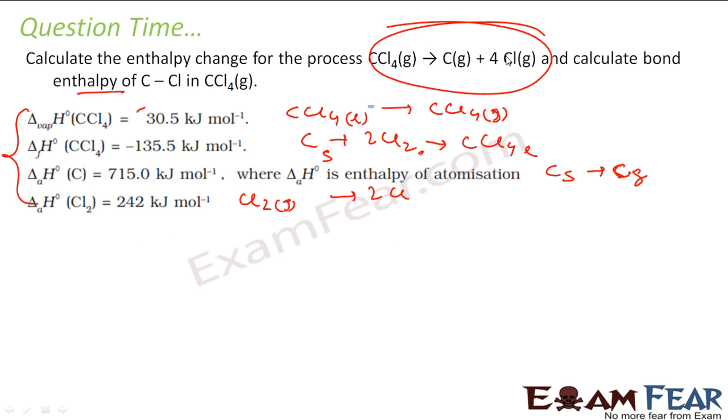And I have to find this formula: CCl4 gives C plus 4 Cl. How can I get this? So I have to get CCl4 on this side. That means I will take, I will just name this reaction 1, 2, 3, and 4.